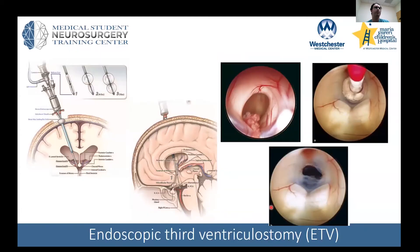For obstructive hydrocephalus — for example where the aqueduct is very narrowed — there's a procedure where you leave no hardware behind. Much of this grew out of experience in Africa, where neurosurgeons would volunteer for about a month, place many shunts, then leave. Shunts are not perfect: they're plastic, they can fracture, break, or pull out. When the surgeons left, these kids had no treatment for complications. So this procedure was developed to treat hydrocephalus without leaving any hardware.